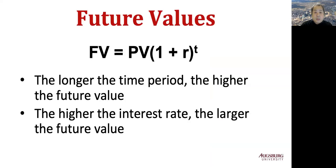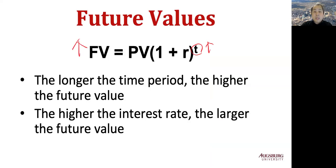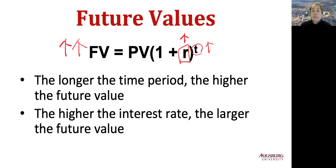From the formula Future Value equals Present Value times (1 plus r) to the t-th power, we can see that the longer the time period — as t increases — the higher the future value. If the exponent t increases, future value increases: more time means more money. Similarly, higher interest rates also increase the future value. Higher interest rate means more value in the future. That's about future value. In the next part, we will see present value.